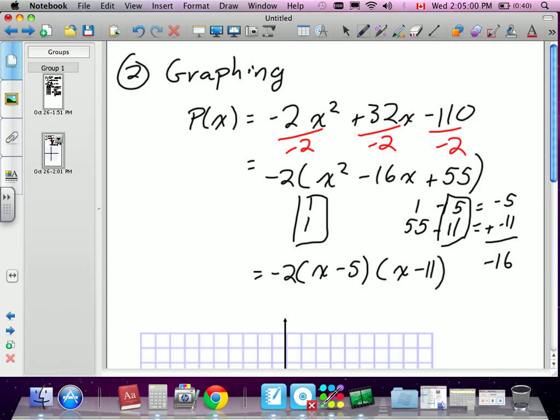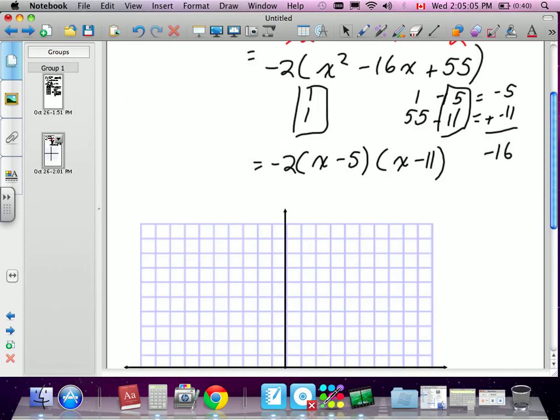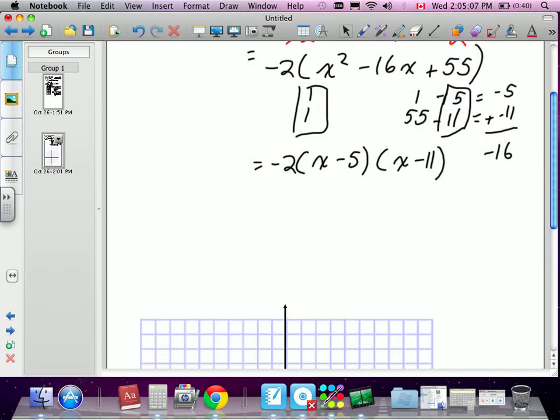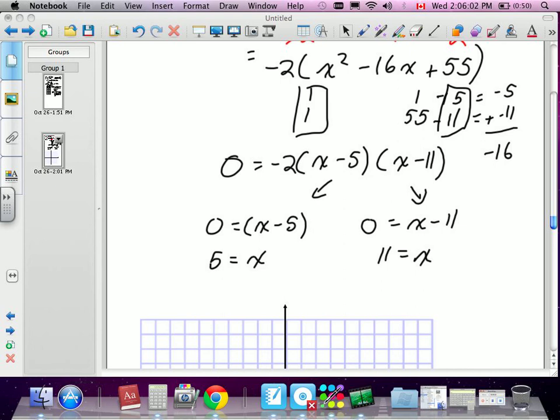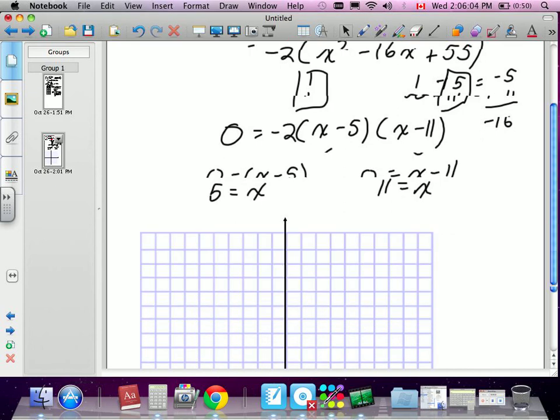When we have this factored, we're going to have (x - 5) and (x - 11). In order to find our x-intercepts, we know we split these. We set the outside of the equation to 0, and we set 0 = x - 5 and 0 = x - 11. So our x-intercepts are 5 and 11. We have our two x-intercepts.